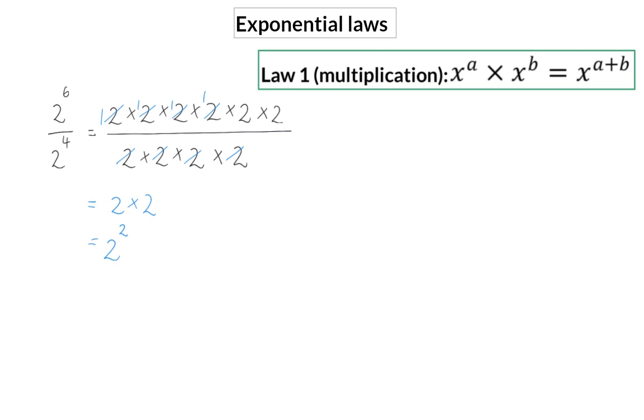This method of expanding the exponential form and then simplifying to get the answer can be very tedious. Luckily, we can use it to form an exponential law. When we are dividing and the base numbers are the same, we can keep that base number constant and then simplify by subtracting the exponents. The reason for that is the six twos in the numerator can be simplified by dividing by the four twos in the denominator, and the difference between the two exponents will indicate the number of twos that are left.